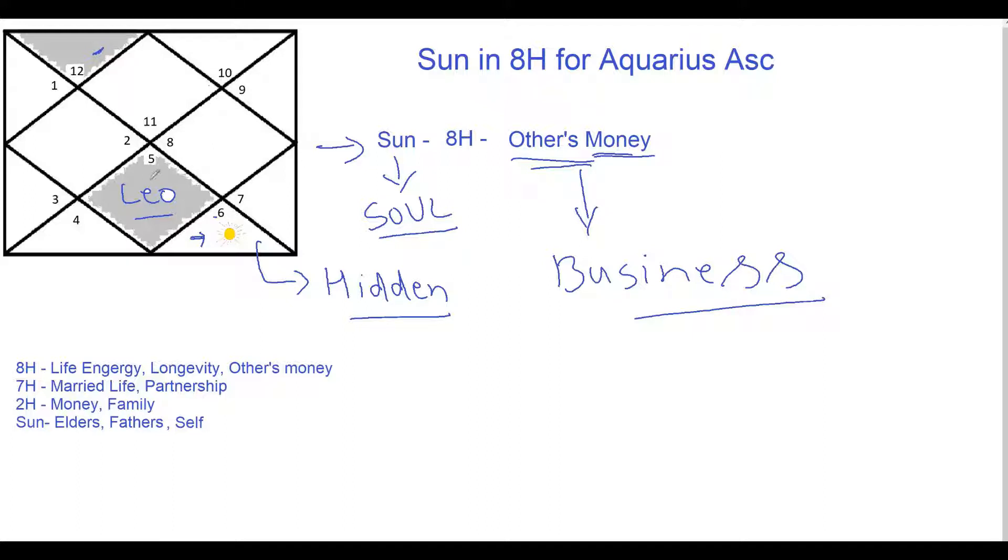Many times because Sun is also the lord of seventh house which shows their partners or wives or husband, if the influence on Sun is good, if there are positive influences on the Sun then their married partners - their wife or husband or their business partners - they become very helpful in their business enterprise and they get success from those money.